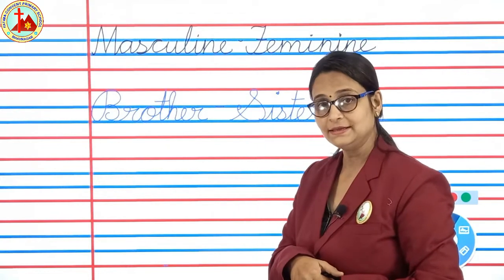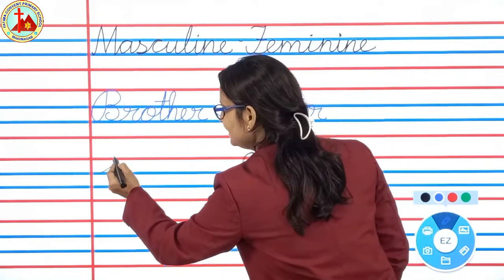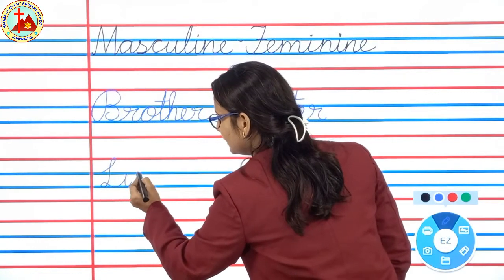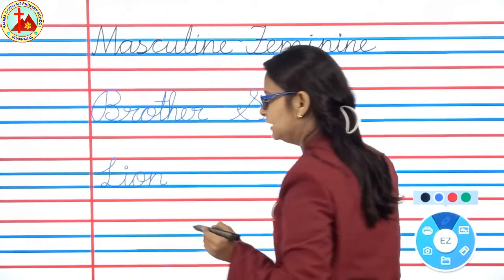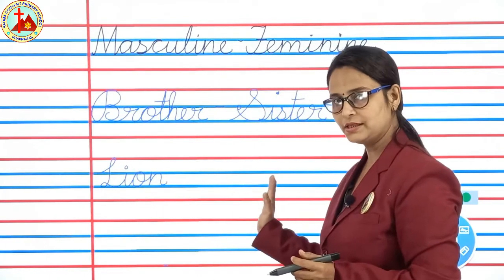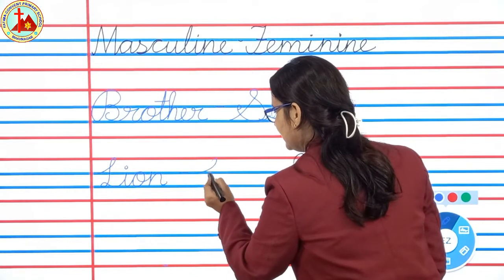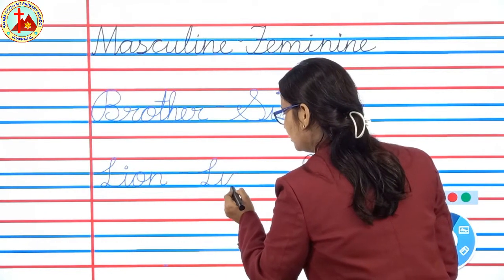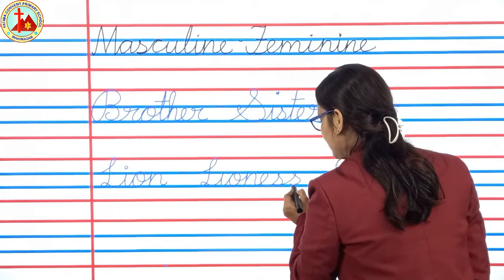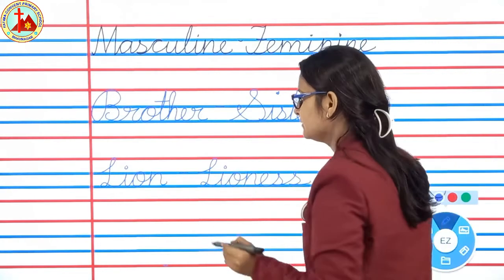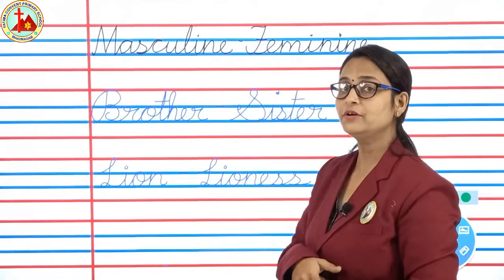Next spelling is lion. L-I-O-N. Lion. And feminine word is lioness. L-I-O-N-E-S-S. Lioness. Lion, lioness.